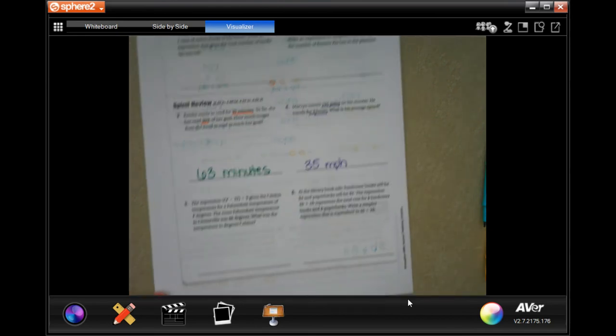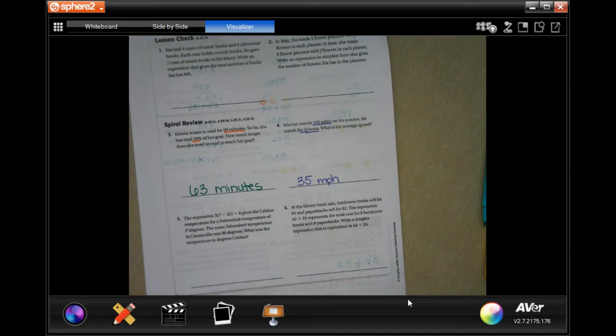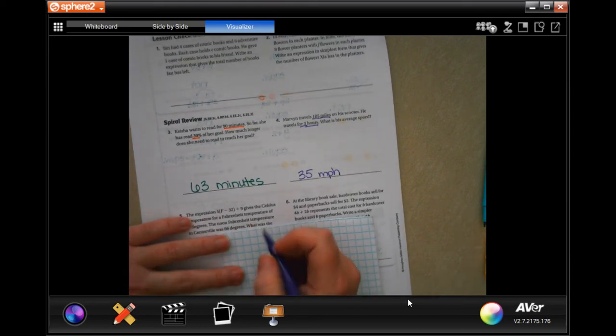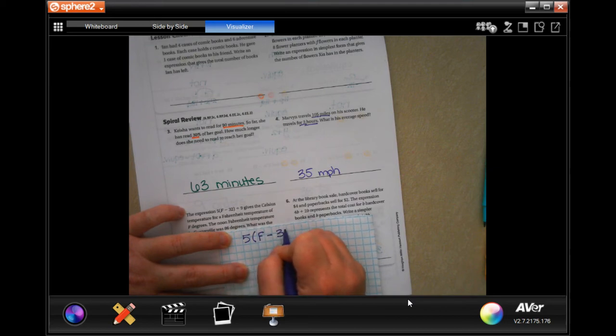The expression 5 onto F minus 32 divided by 9 gives the Celsius temperature for a Fahrenheit temperature of F degrees. The noon Fahrenheit temperature in Centerville was 86 degrees. What was the temperature in Celsius? So, let's go use our scrap paper, and I'm going to write down the formula first.